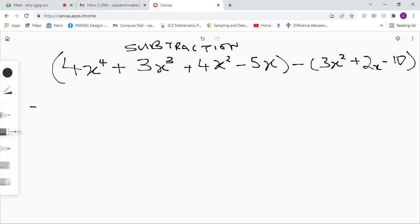So before we begin our operations, we're going to have to distribute the negative sign into this parenthesis. Alright, so first we'll write our first expression here, which is 4x to the power of 4 plus 3x cubed plus 4x squared minus 5x.